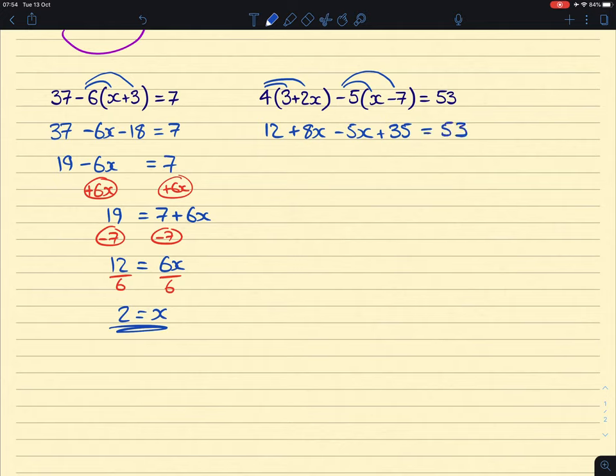Now it's simplifying on the left-hand side. It doesn't matter whether you do the numbers or letters first. First, my eyes are drawn to the fact that we have 8x take away 5x, so we'll end up with 3x. And we then have 12 plus 35, so we get 47. That equals 53.